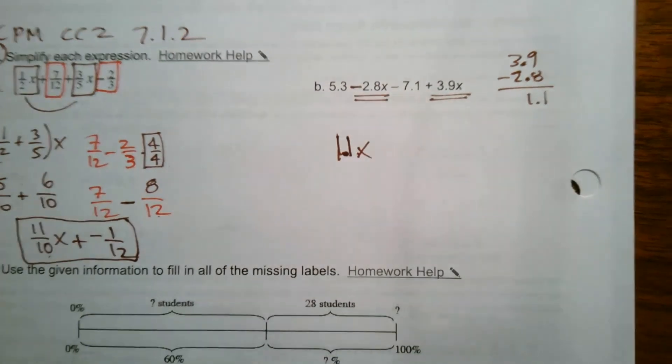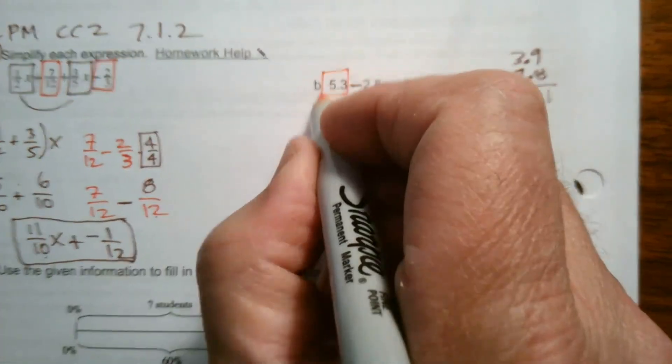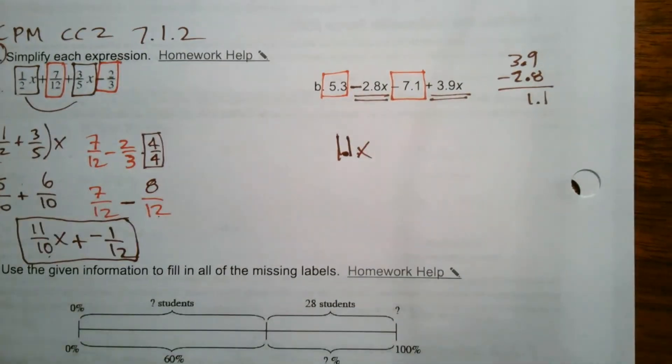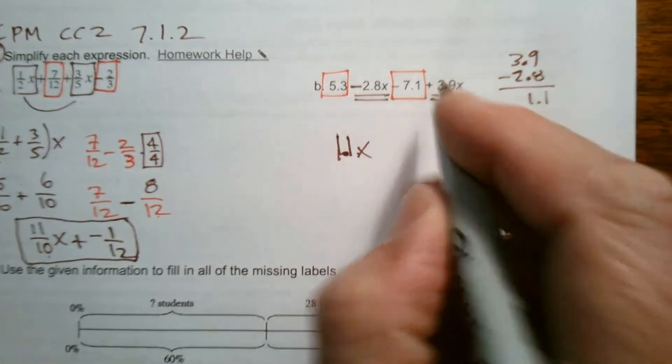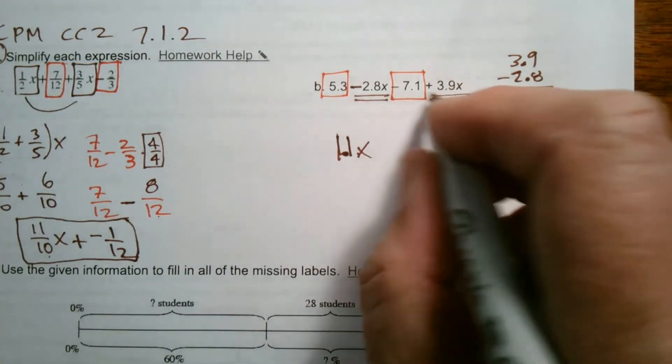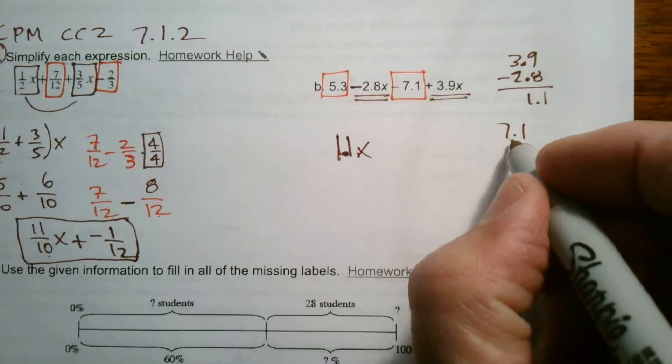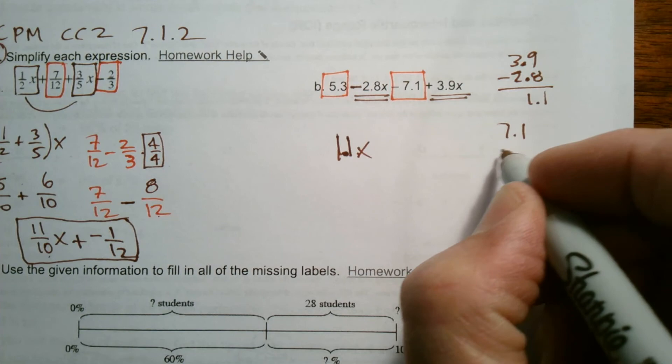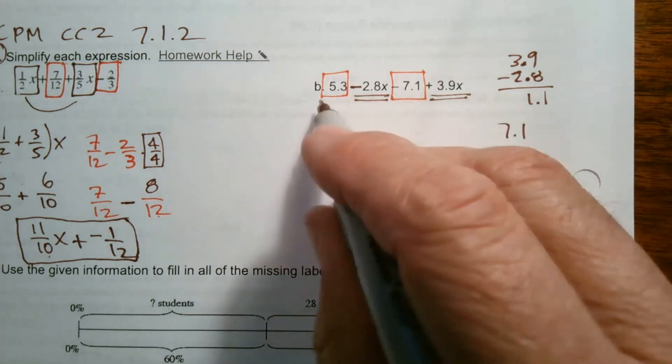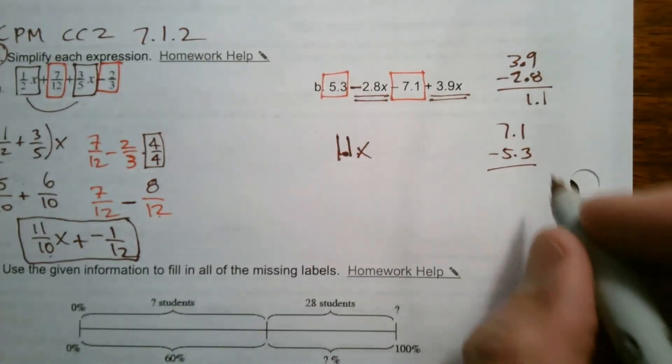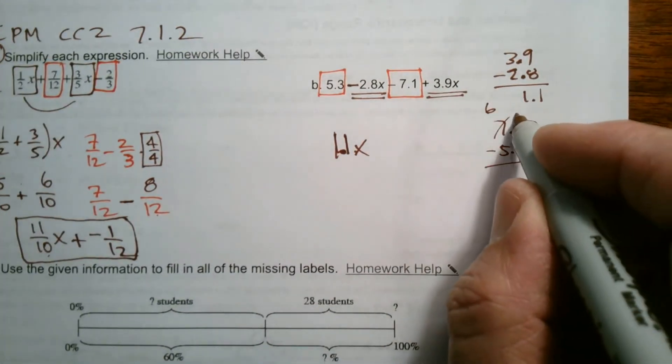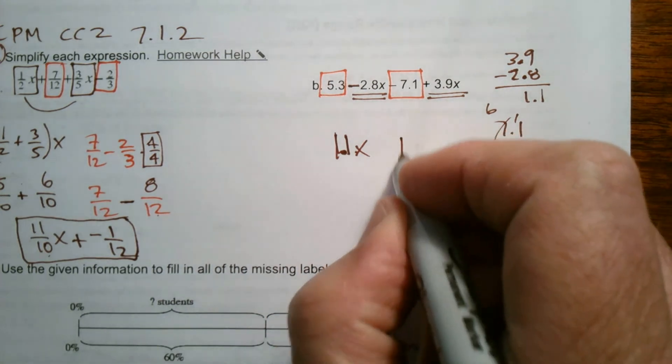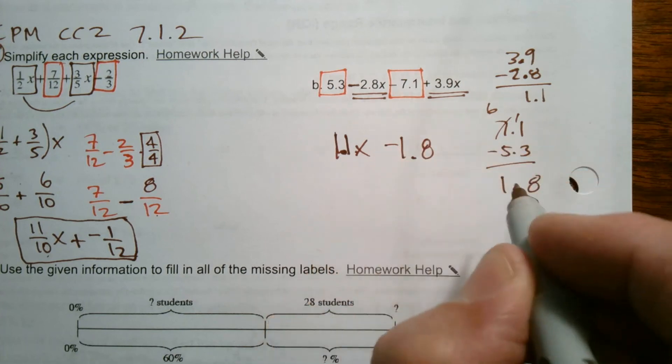And then my constants, I have a 5.3 and then, pay attention to the signs, a negative 7.1. So again, positives and negatives, I'm going to subtract, but I'm going to put the larger absolute value of the larger number up top. So there's more negatives. So I know my number is going to be negative, but I still got to go 7.1 minus 5.3 when I find the difference of those two. When they're opposite signs, you find the difference. So it looks like I got to regroup. 8, bring down the decimal, 1, 1.8. And it's 1.8, but it's a negative 1.8.